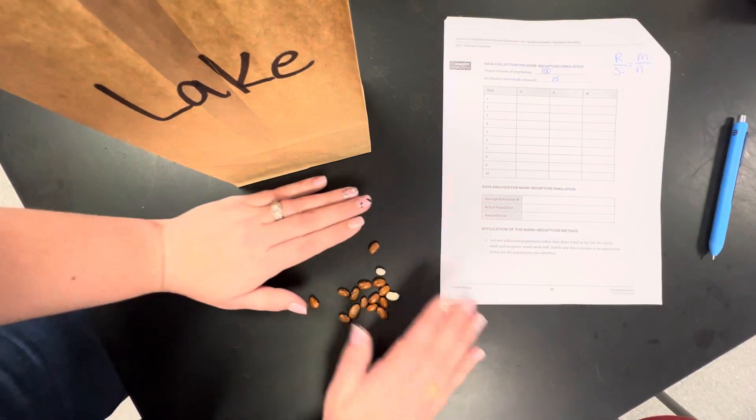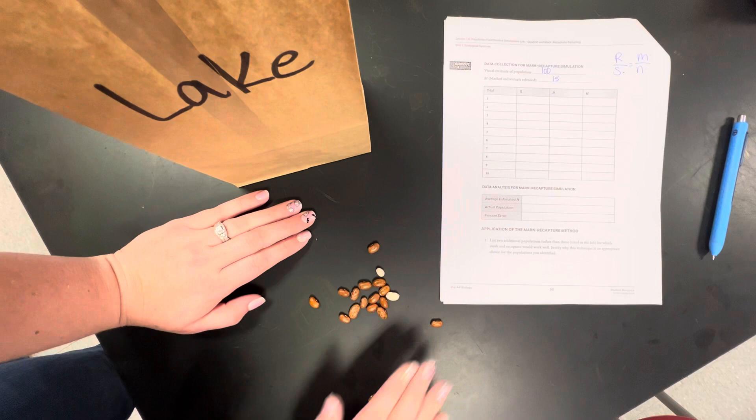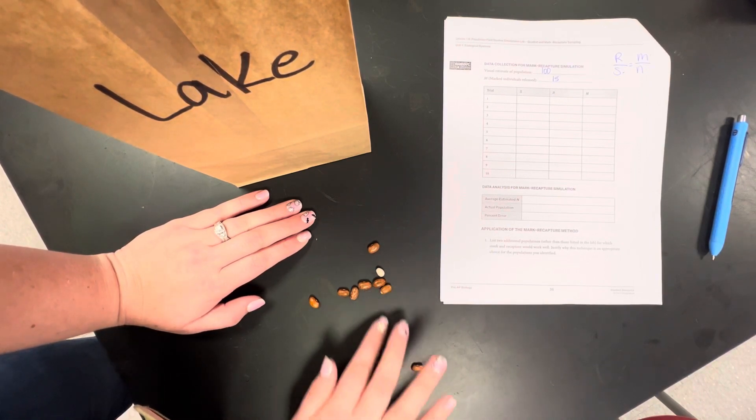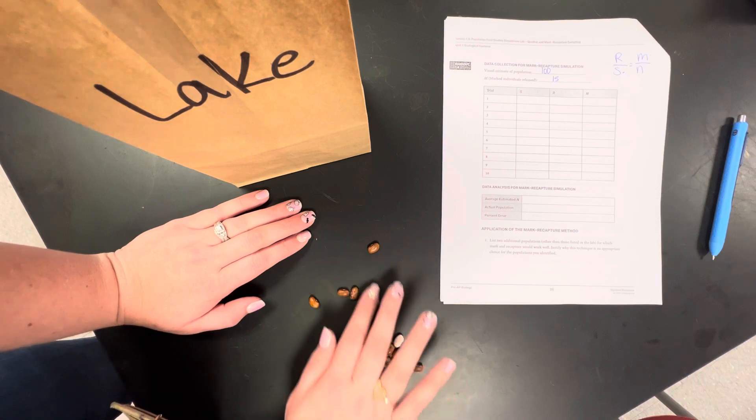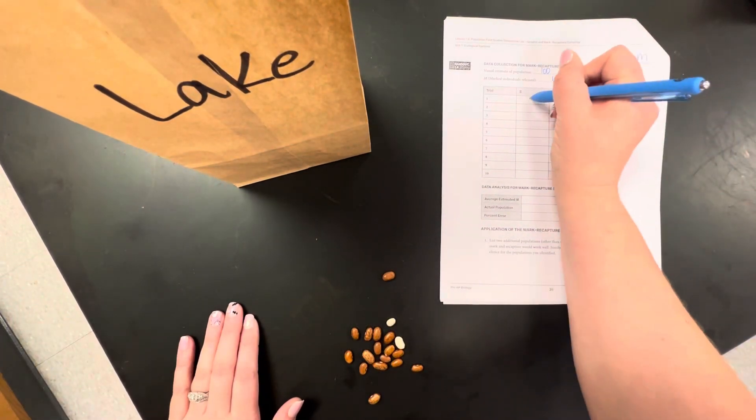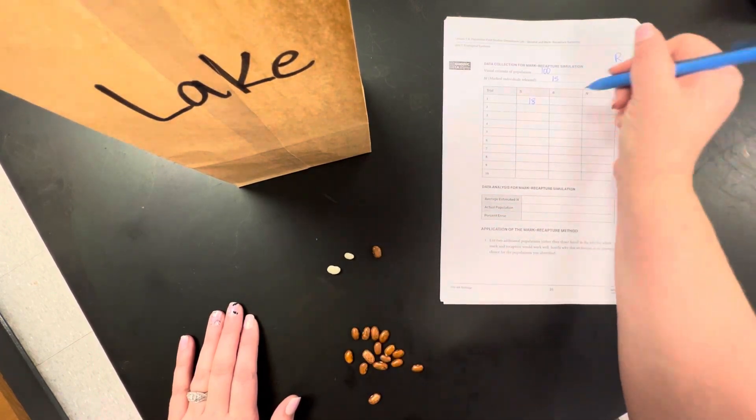So now I am going to shake it over and I am going to go and take another sample. And we are going to, my second sample, which will be S, will be 1, 2, 3, 4, 5, 6, 7, 8, 9, 10, 11, 12, 13, 14, 15, 16, 17, 18. Of that 18, two of them were recaptured.